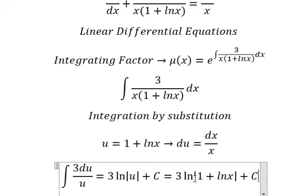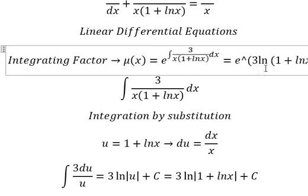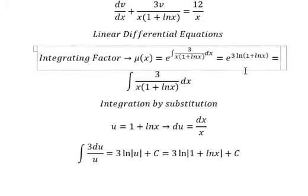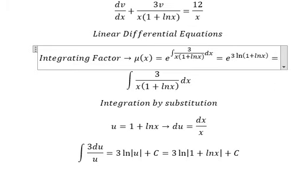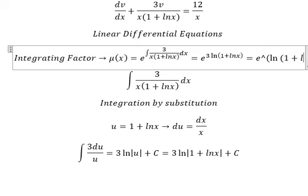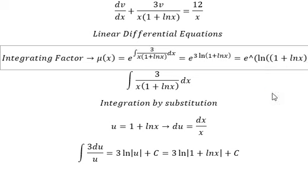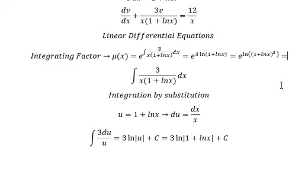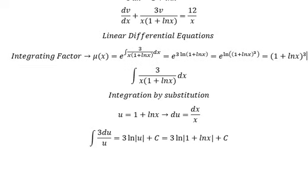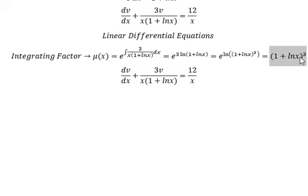In this case, we don't need to use the constant c or the absolute value, so we can write the integrating factor like this. The number 3 goes inside the natural log, and then we simplify the expression.